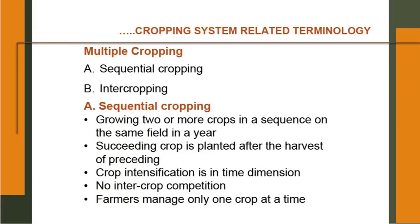Multiple cropping: there may be two kinds of cropping — monoculture and multiple culture. Monoculture means growing one kind of crop year after year, for example taking just one crop of rice every year in certain areas. Multiple cropping is growing two or more crops in a year, and it can be divided into two — sequential cropping and intercropping. Sequential cropping means growing two or more crops in sequence one after the other on the same field in a year; a succeeding crop is planted after the harvest of the preceding crop. Crop intensification is in the time dimension — no intercropping competition and farmers manage only one crop at a time.